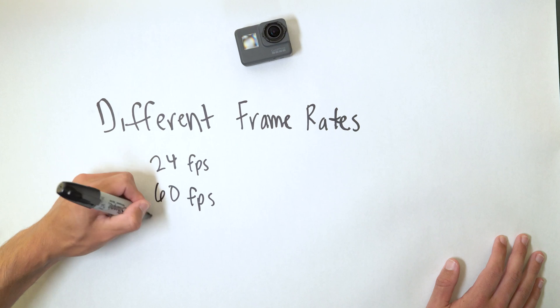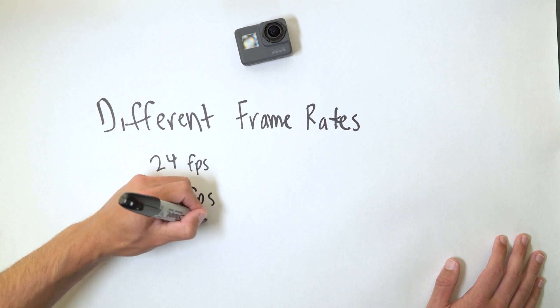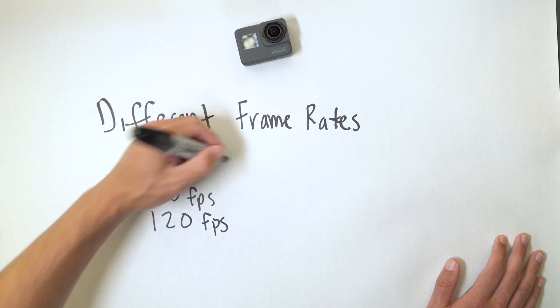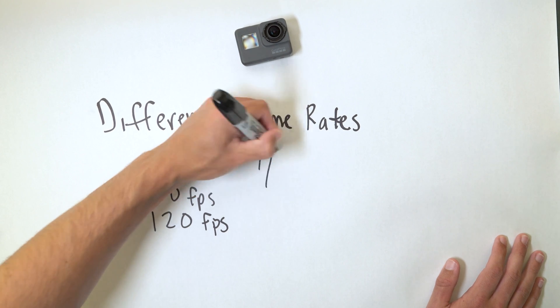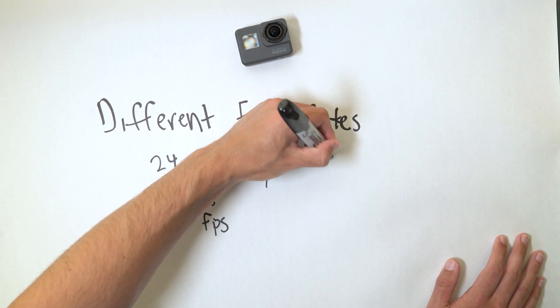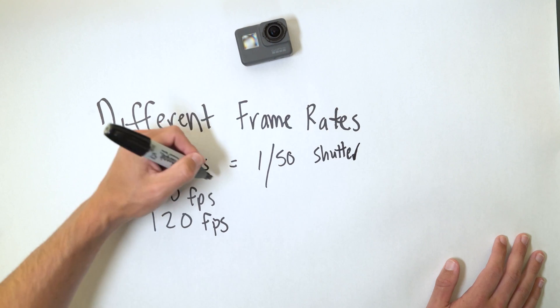We're gonna look at how to set your ProTune in your GoPro to get cinematic results. It all goes down to the fundamentals: your frame rate needs to be half of your shutter speed. So if you're shooting at 24 frames per second, in order to get cinematic motion blur you're gonna have to set your camera to either 1/48th or 1/50th shutter speed.